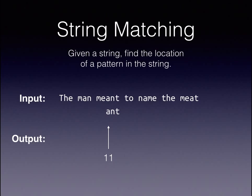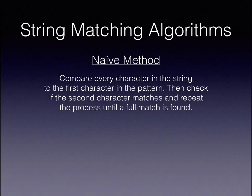So, how do we go about doing this? Well, the naive method of string matching is simple. We compare the first character of the pattern with each character of the input string. When a match is found, we compare the second character and continue this process if they match. If not, we resume matching with the first character.